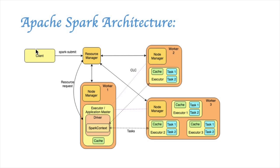When you submit a Spark application using a spark-submit command, the spark-submit utility interacts with the resource manager and creates a container in one of the nodes called the application master. The driver program runs in the application master and it creates the Spark context.